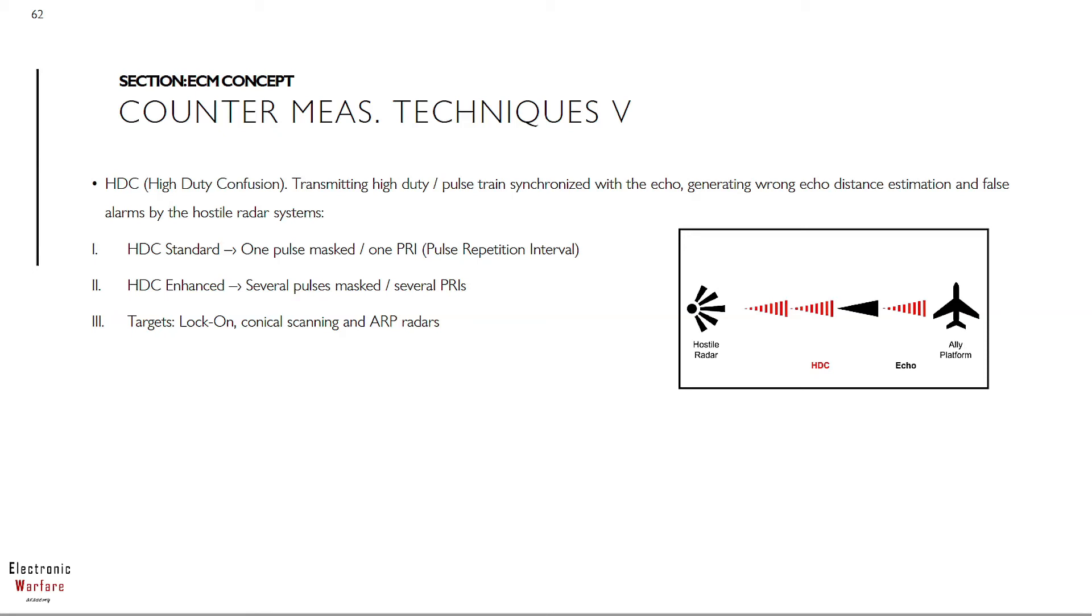Then if what we want is jamming velocity data, we have VGPO and VGPE. These are the techniques we should use. Here we generate identical echo plus Doppler shift.